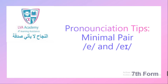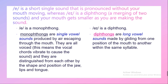In this video we will focus on two English vowel sounds: /ɛ/ and /eɪ/. /ɛ/ is a short single sound that is pronounced without your mouth moving, whereas /eɪ/ is a diphthong, which means a merger of two sounds, and your mouth gets smaller as you're making the sound. /ɛ/ is a monophthong — monophthongs are single vowel sounds produced by air escaping through the mouth.